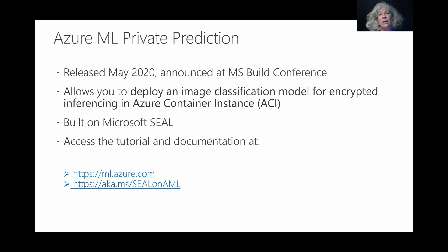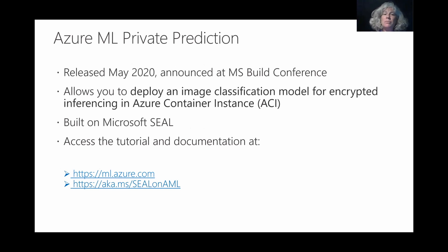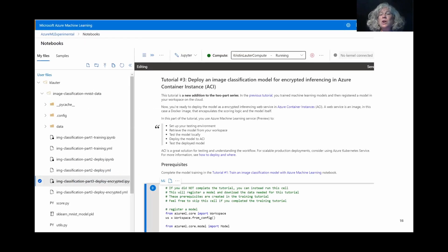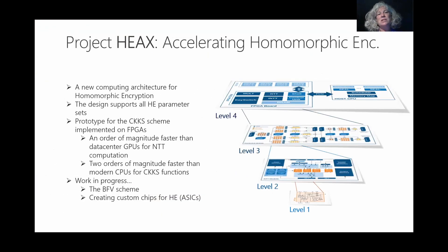Today I'd like to highlight that homomorphic encryption is a very useful technology released by Microsoft Research, and the SEAL library is available. At Build in May 2020, we announced the availability of notebooks for private prediction built on Microsoft SEAL. You can access the tutorial and documentation for Azure ML SEAL to do private prediction and try it out yourself. In conclusion, I'd also like to point to the next talk by Saeed Riazi on Project HAOX, which is accelerating homomorphic encryption with hardware such as FPGAs. Thank you so much — I hope you'll go to sealcrypto.org, download SEAL, and start using it to ensure privacy in your ML applications.